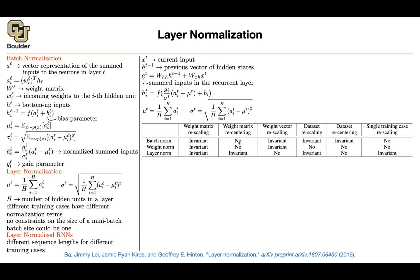If you re-center your weights (subtract a scalar from your weights), batch norm and layer norm are invariant, but weight norm is not. If you re-scale individual rows of your weight matrix independently, batch norm and weight norm are invariant but layer norm is not. If you re-scale your data, batch norm is invariant and layer norm is invariant, but weight norm is not. If you re-center your data, batch norm is invariant, but the other two are not. And if you re-scale a single training case, layer norm is invariant but the other two are not. This is one reason why normalization works — the scale of your data doesn't really matter.